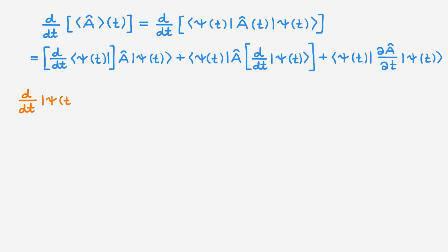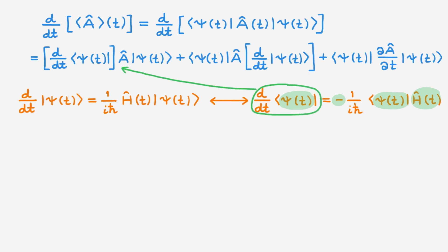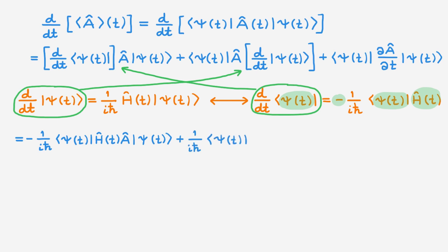To make progress we now write the Schrödinger equation, which tells us about the time evolution of the ket, and we're also going to need the Schrödinger equation in the dual space to obtain the time derivative of the bra. Remember that in going to the dual space, kets become bras, scalars become their complex conjugates — hence the minus sign — and in principle operators become their adjoints, but the Hamiltonian is a Hermitian operator so we can write it directly without the adjoint. We're now ready to complete the calculation of the time derivative of the expectation value. We take the expression for the time derivative of the bra and insert it, getting the first term, and similarly insert the expression for the time derivative of the ket, getting the second term, plus the unchanged third term.